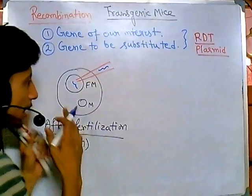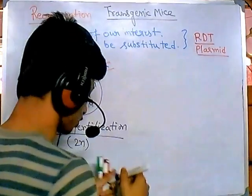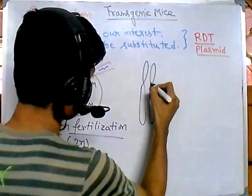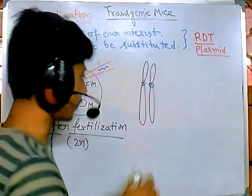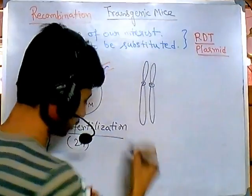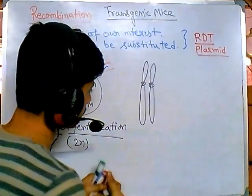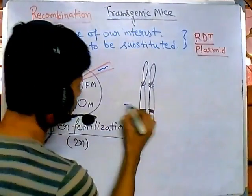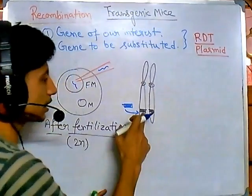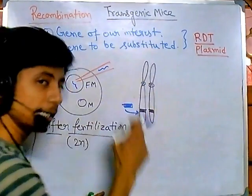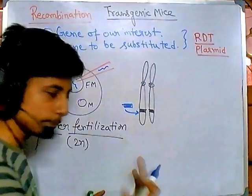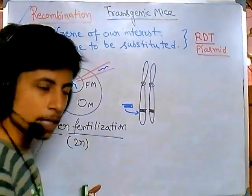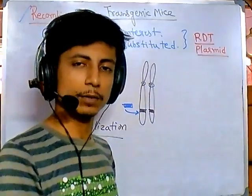Once our desired gene is inside, let's zoom in on what happens. This is a mouse chromosome — let me draw one pair. Suppose there is a gene that I need to substitute. We just put our desired gene in, and once we do that, our desired gene simply replaces the wild type gene present in the mice chromosome. This whole process is done using recombination — specifically, site-specific recombination.